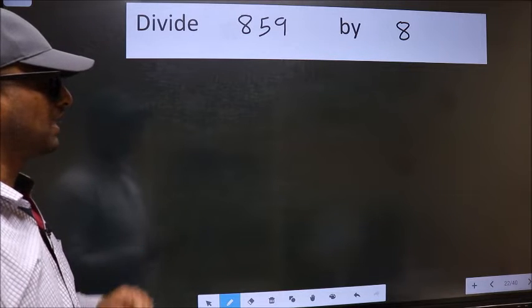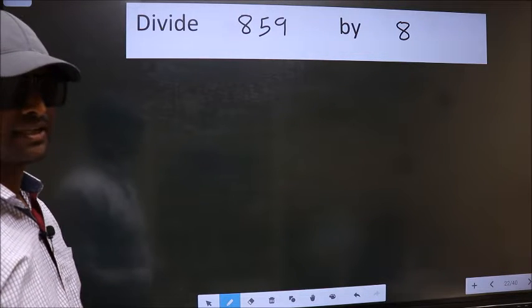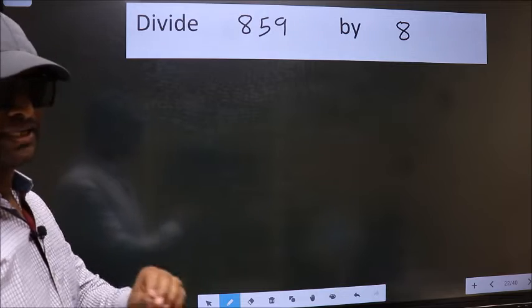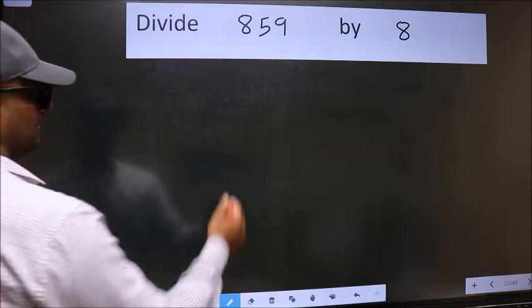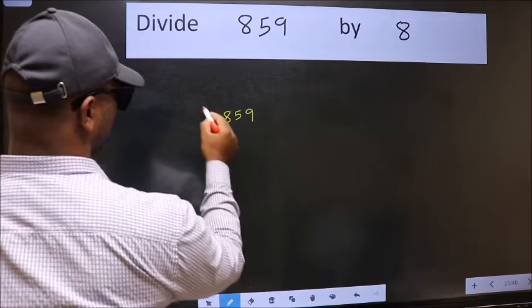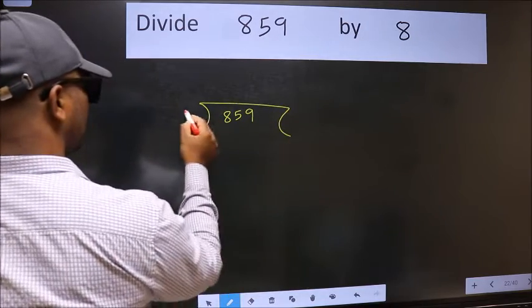Divide 859 by 8. To do this division, we should frame it in this way: 859 here and 8 here.